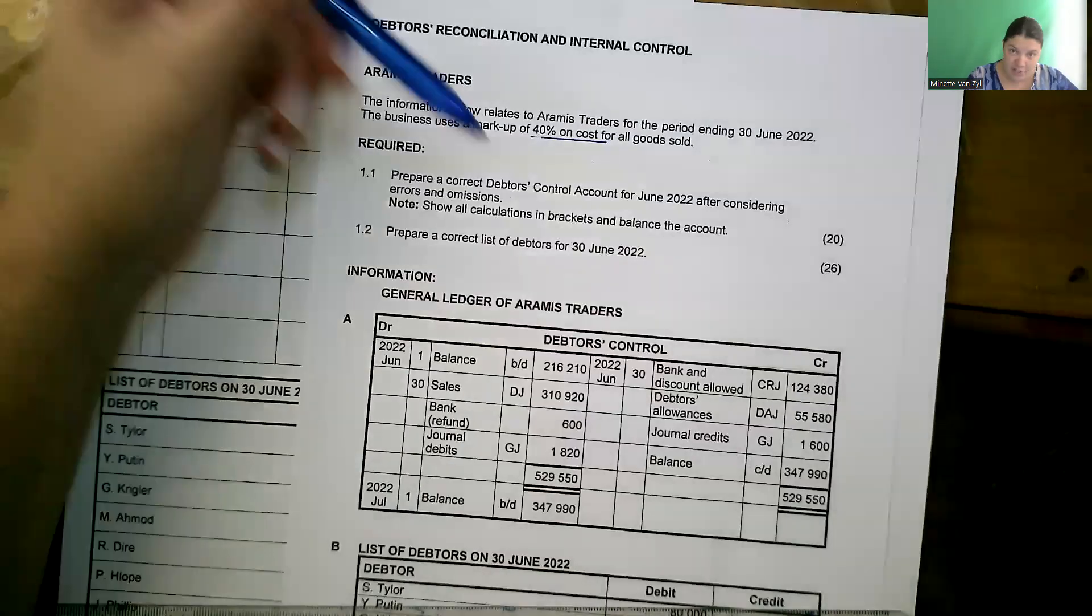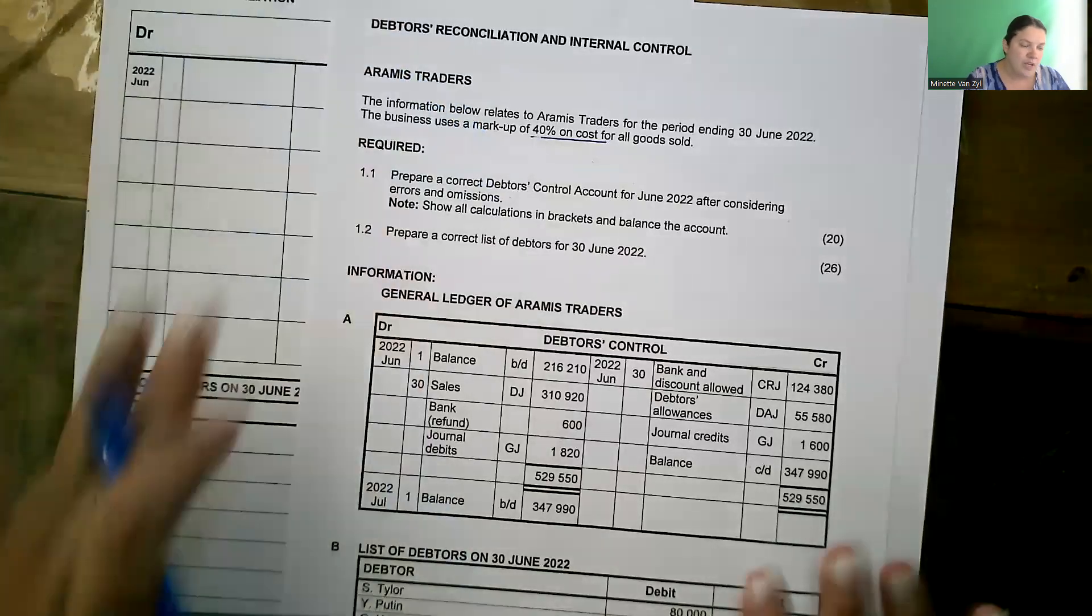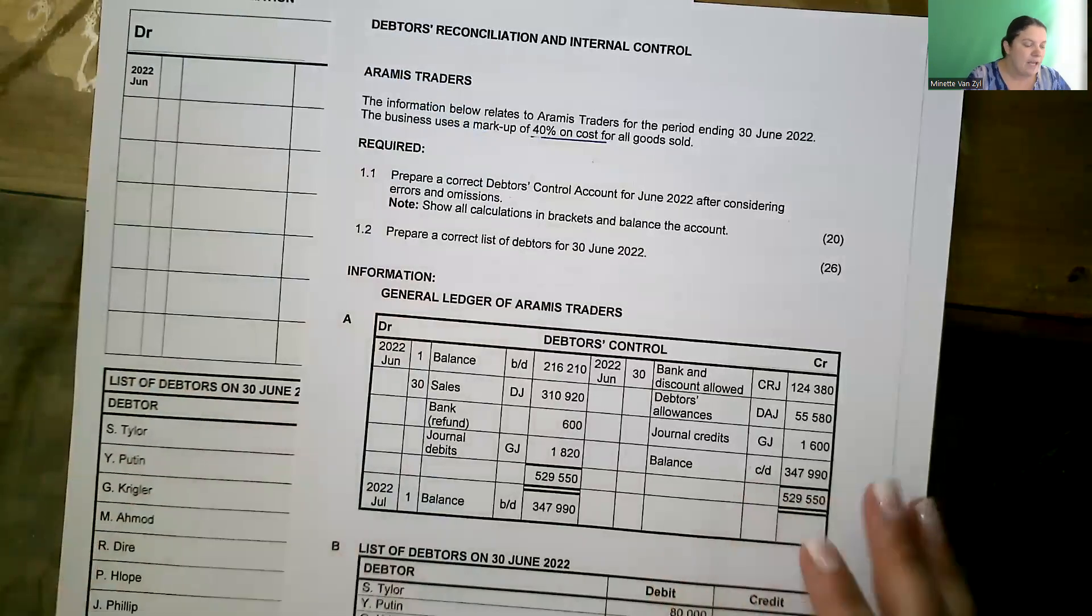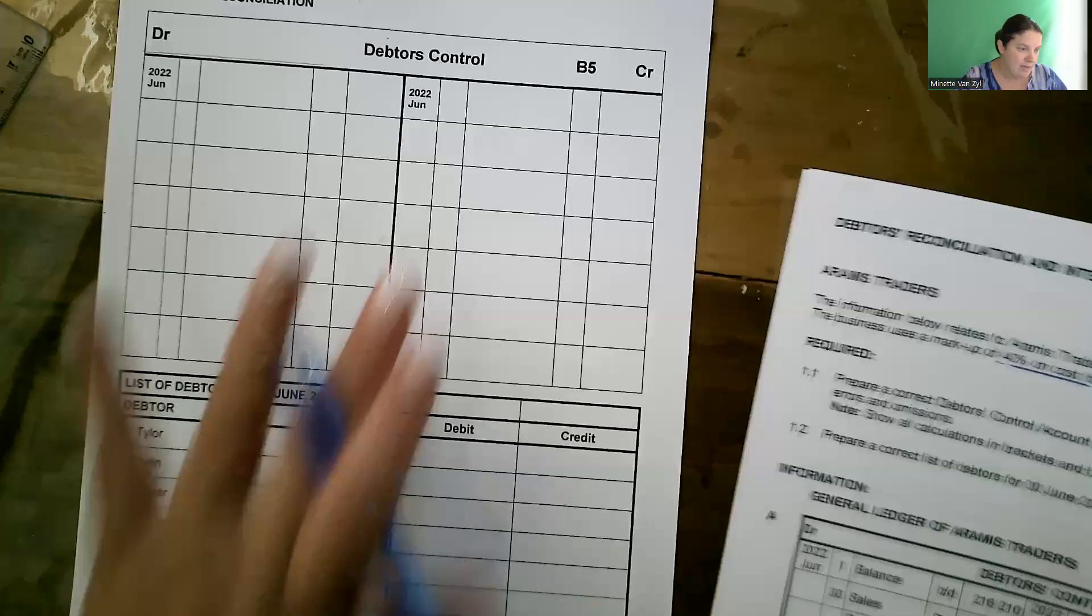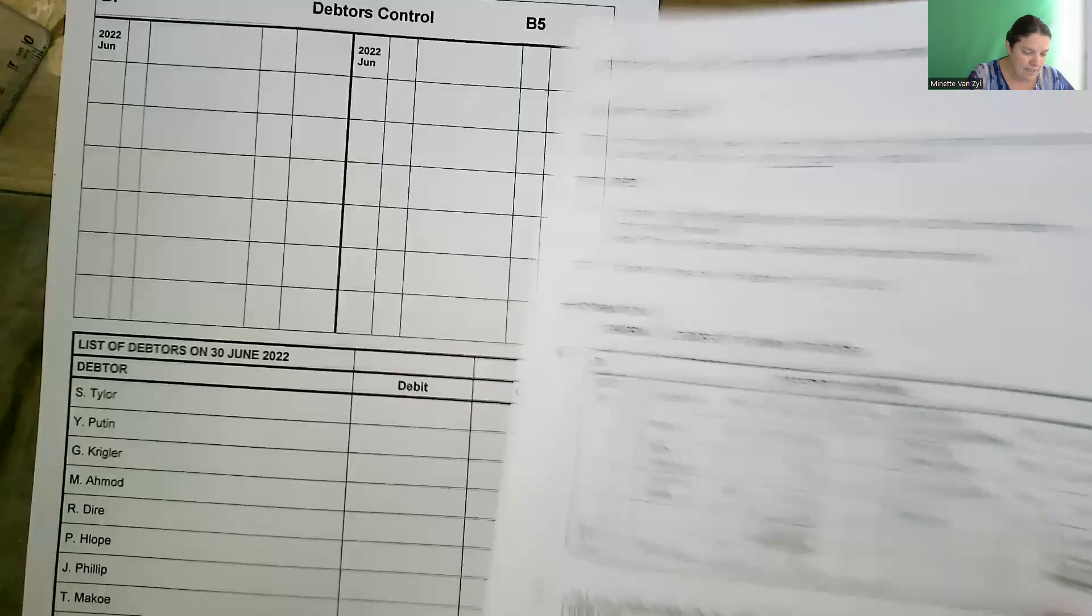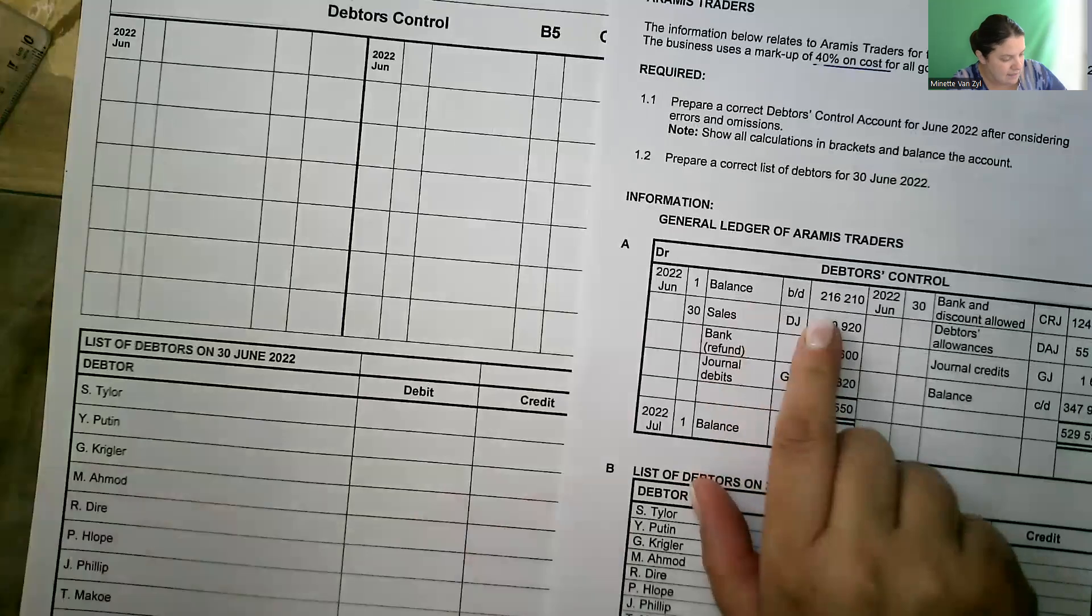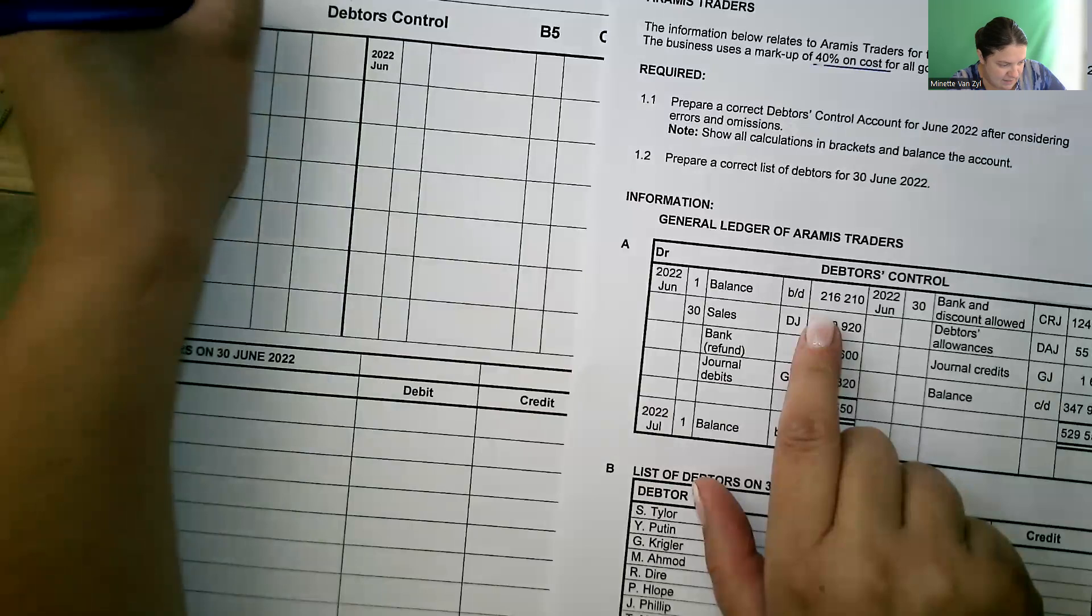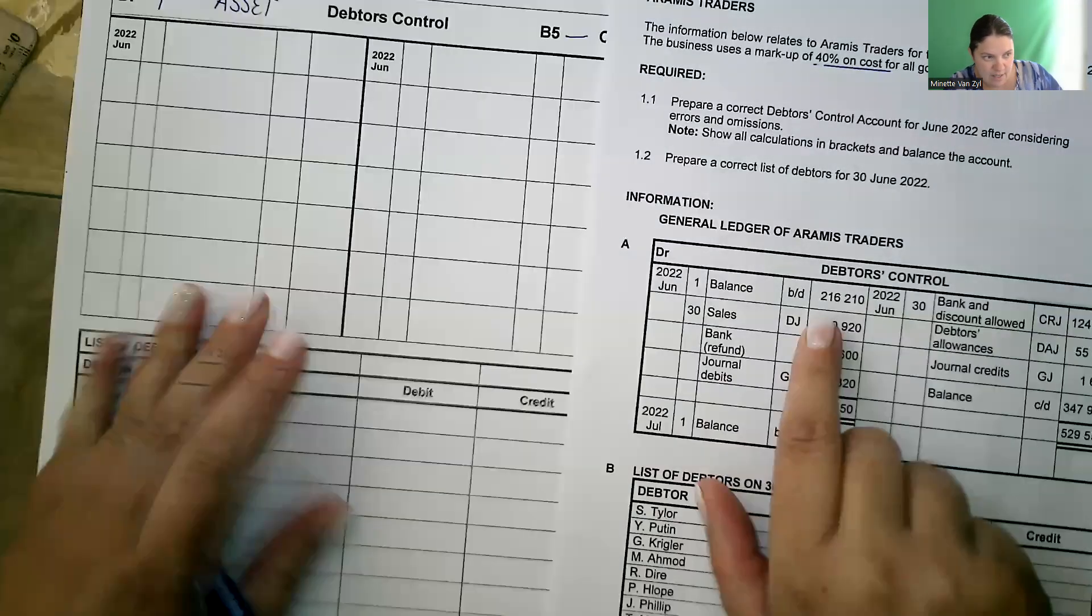So we're going to prepare the debtors control account and the debtors list. When we start with a debtors recon question like this, your first step would be to put in your format. I've got an open debtors control and my debtors list. First step: format. Remember debtors control, it's an asset. Plus on the debit, minus on the credit.